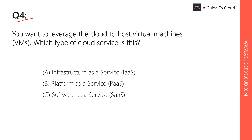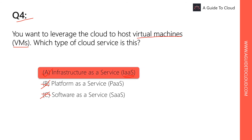Question four: You want to leverage the cloud to host virtual machines (VMs). Which type of cloud service is this? The keyword is virtual machine. Hosting VMs corresponds to Infrastructure as a Service (IaaS), where you control which operating system and applications to install. PaaS doesn't allow you to install a VM, and SaaS also does not provide a VM. The right answer is A — IaaS.